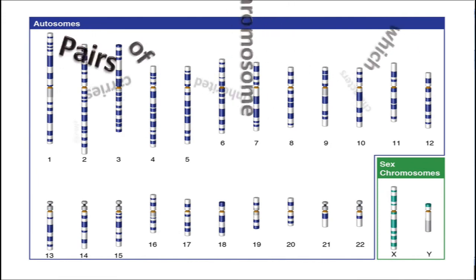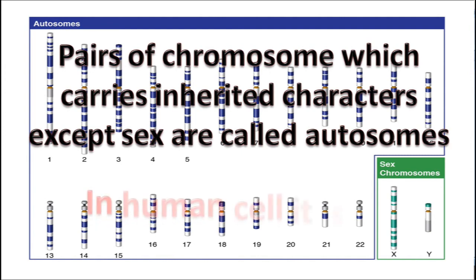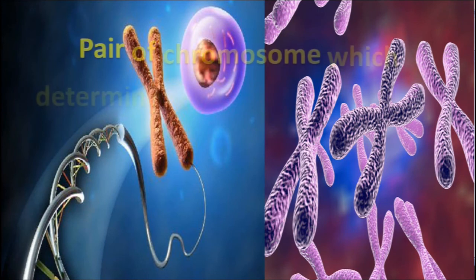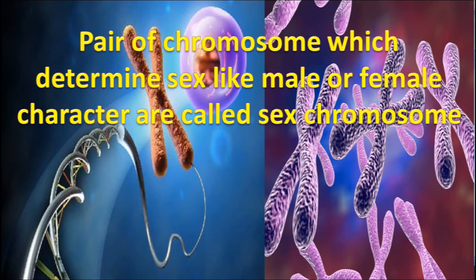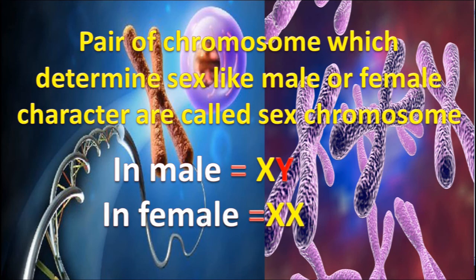On the basis of function, chromosomes are divided into two types. Pairs of chromosomes which carry inherited characters, except the sex chromosomes, are called autosomes. In the human cell, 44 autosomes are found which carry hereditary characters. The pair of chromosomes which determines sex — male or female — is called sex chromosomes. In males, sex chromosomes are represented by the heterogeneous type XY; in females, by the homogeneous type XX.